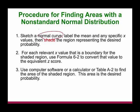First of all, sketch a normal curve — you can also call that a bell curve. Label the mean and any specific x-values. Shade the region representing the desired probability, using an x-value as a boundary for the shaded region. Using the z-score formula (formula 6-2), convert that value to an equivalent z-score. The z-score is like the tool or bridge connecting the continuous random variable with the probability. You can also use computer software, a calculator, or table A2 to find the area of the shaded region. This area is the desired probability.